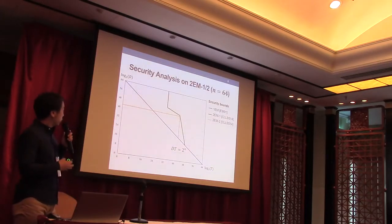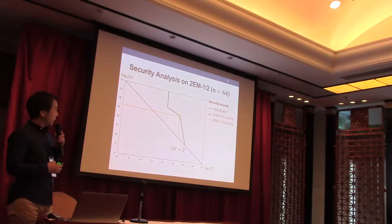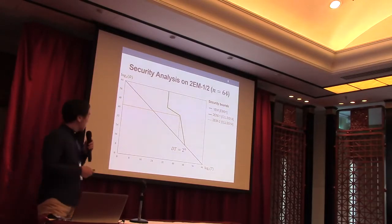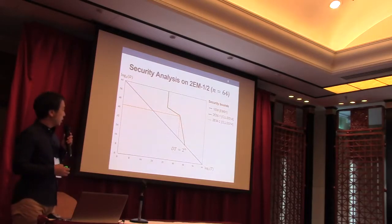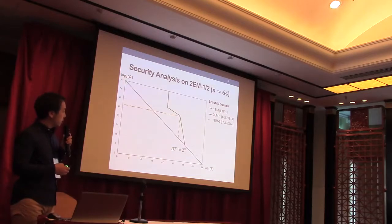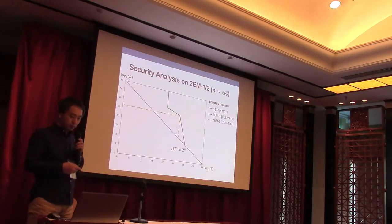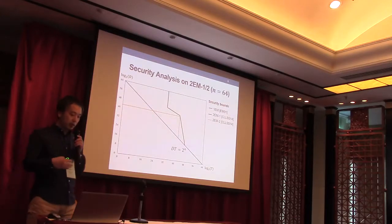This is a summary of security analysis on 2EM1 and 2EM2 with respect to DT when n equals 64. This green line shows the security bounds for 2EM1 and this yellow line is the bounds for 2EM2 approved by Chen et al.